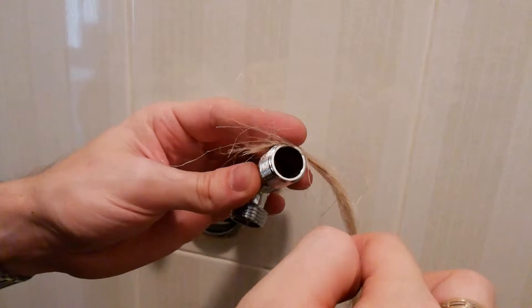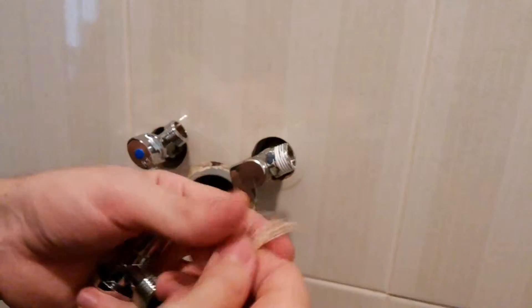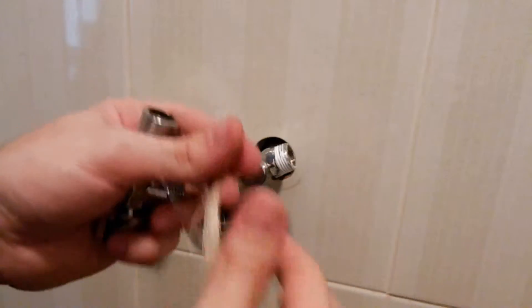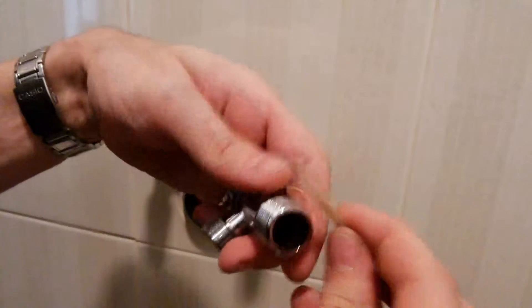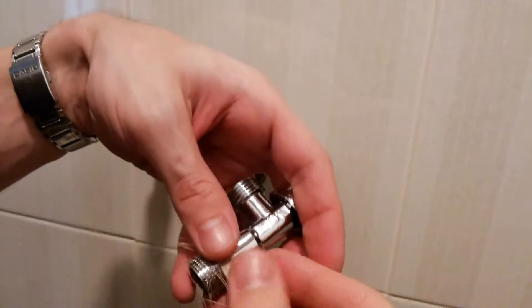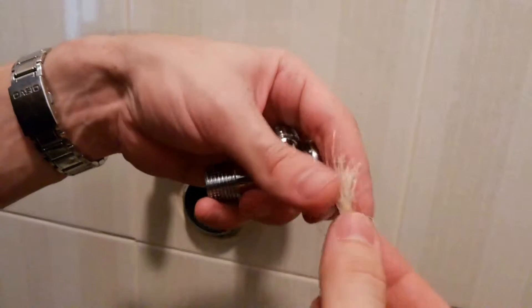Wrapping the wrong direction may result in the tape coming unwound as the fittings are tightened. Take some flax long enough for several turns around the thread. If it's too much, it will push down with the thread and you need to start again with new flax.